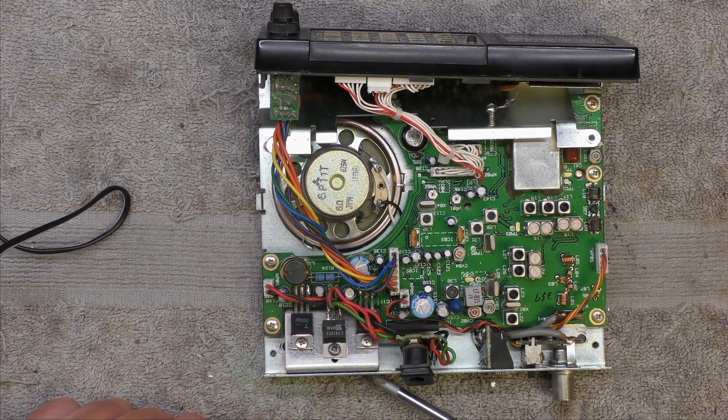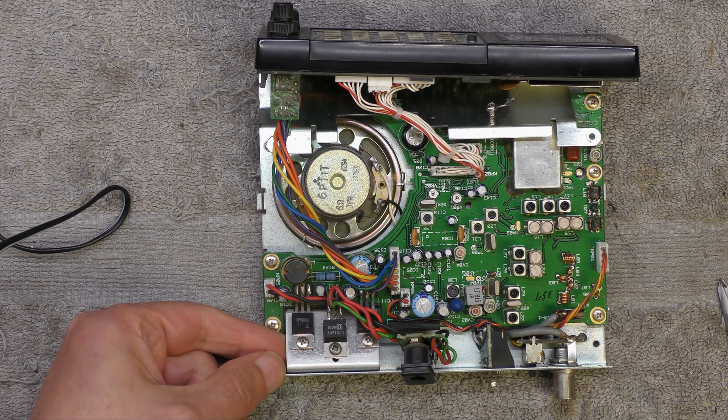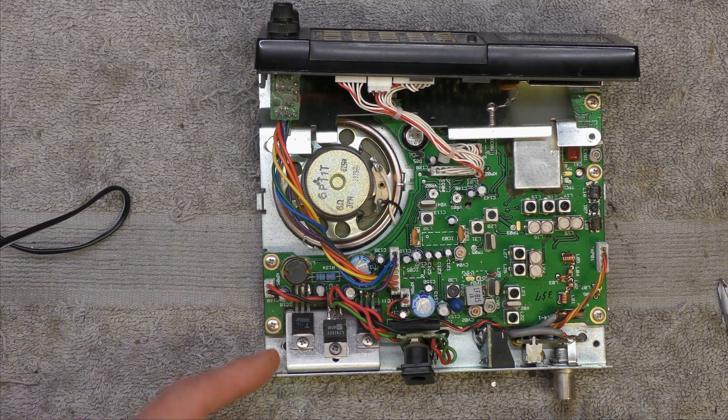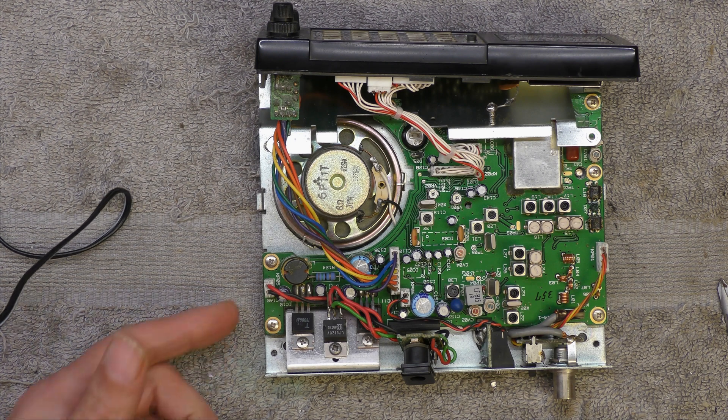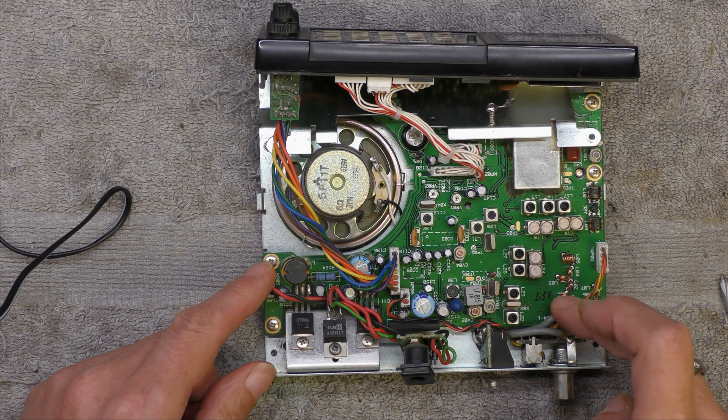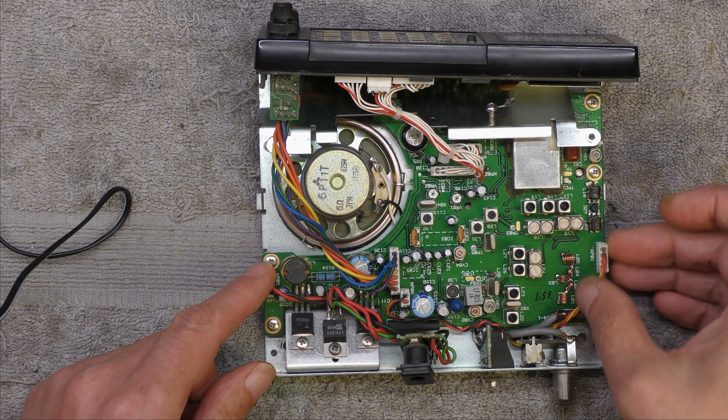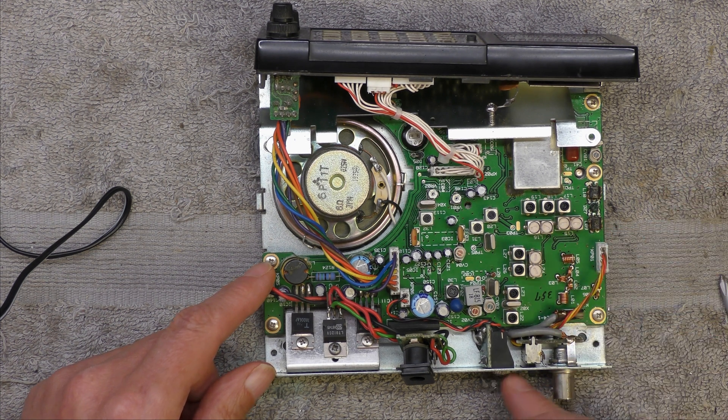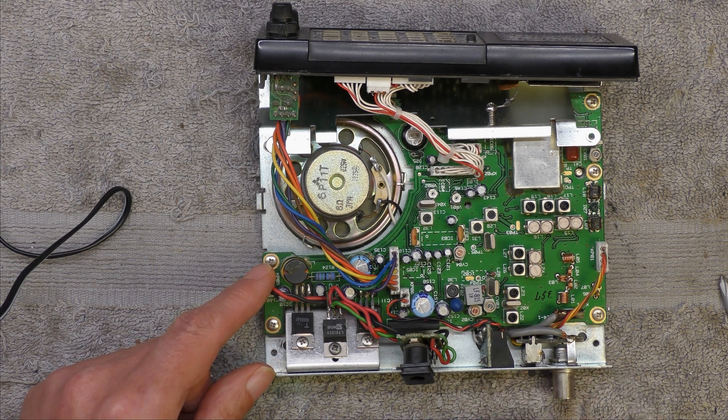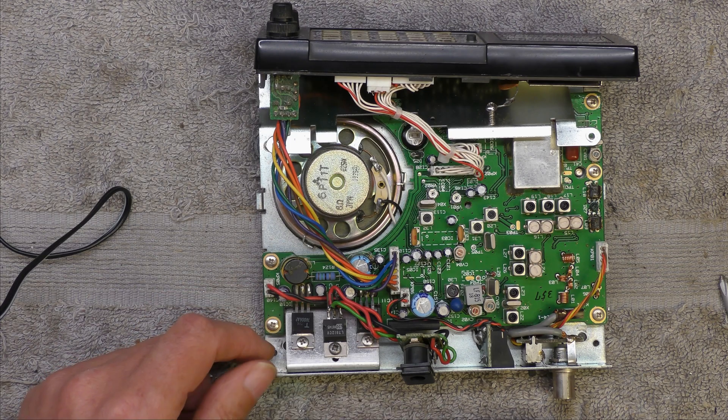So it looks like the two screws here that hold the heat sink because that appears to be fixed to the PCB. All these connectors have to come off. Looks like there's an aerial connector and also a connector for these, but I think the earphone will probably need to be unscrewed. Hopefully then I can access the circuit board.